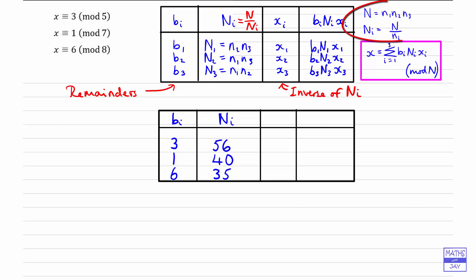For the first row — remainder 3 with modulus 5 — we multiply 7 and 8 together, giving 56. The next one multiplies 5 and 8, giving 40. The last one multiplies 5 and 7, giving 35. You can also compute N = 5×7×8 = 280 and then divide by the relevant modulus: 280÷5=56, 280÷7=40, 280÷8=35. Two ways of working those numbers out.